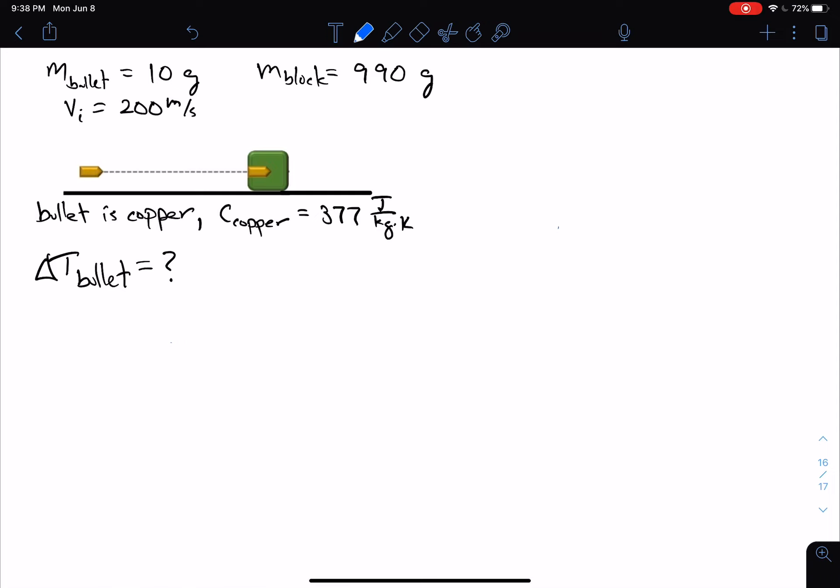So to begin with, we know that this is just conservation of momentum. And so initially, the initial momentum has to equal the final momentum, and initially we have the bullet. And afterwards, we've got the bullet plus the block.